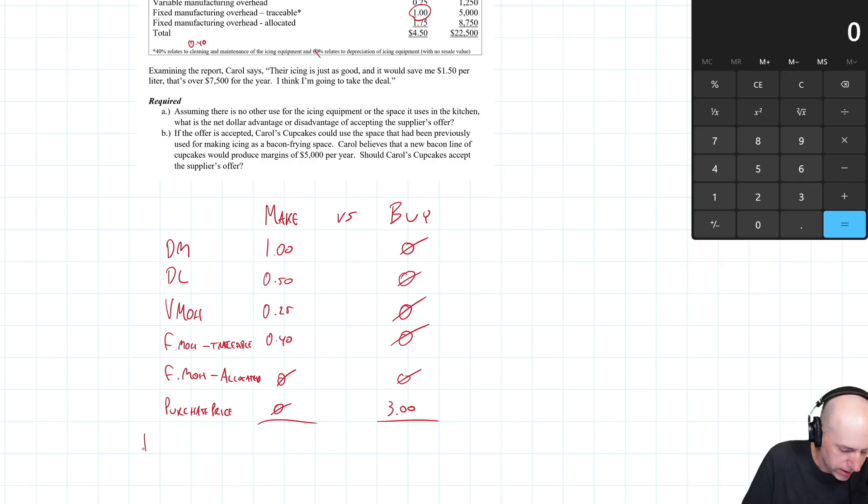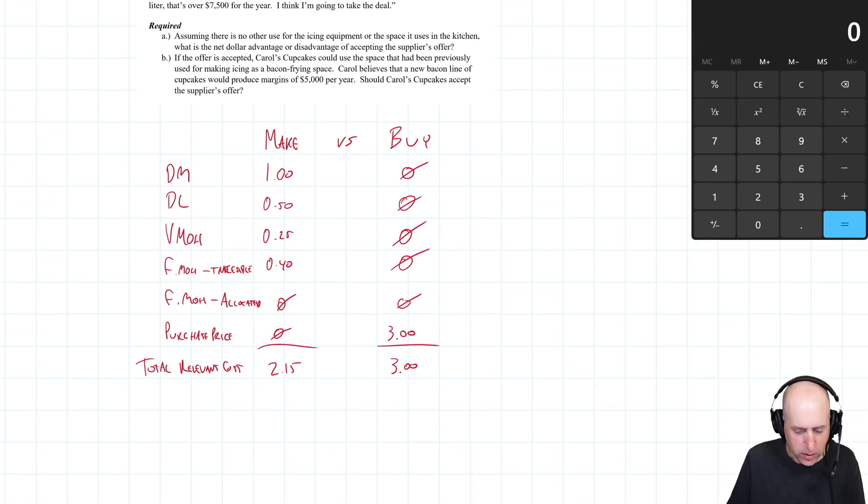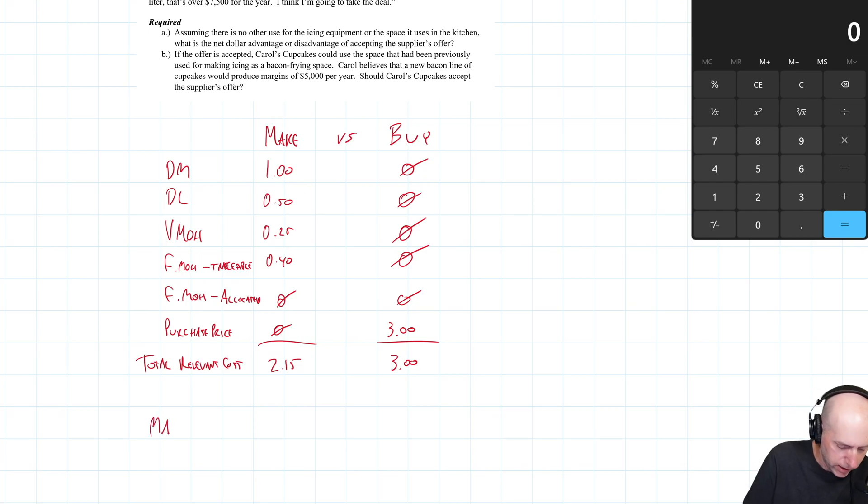So let's add this up, the total relevant cost of making. A dollar plus 50 is $1.50, $1.75, $1.75 plus 0.4 is $2.15 and 0, 0, 0, 3. Yeah. So you can see, make is 85 cents per liter better than buy.